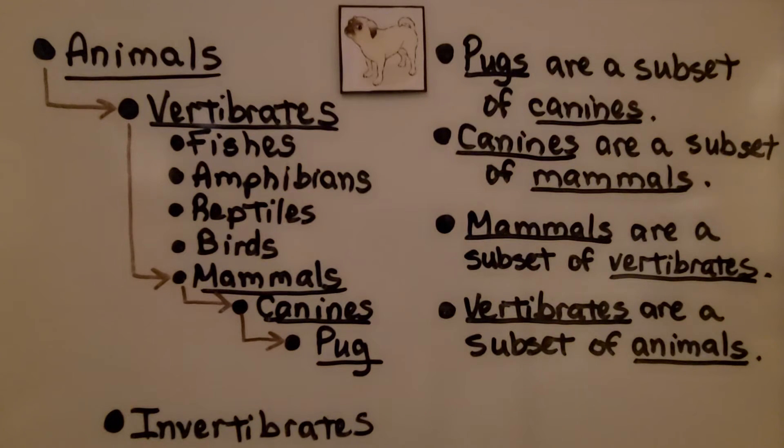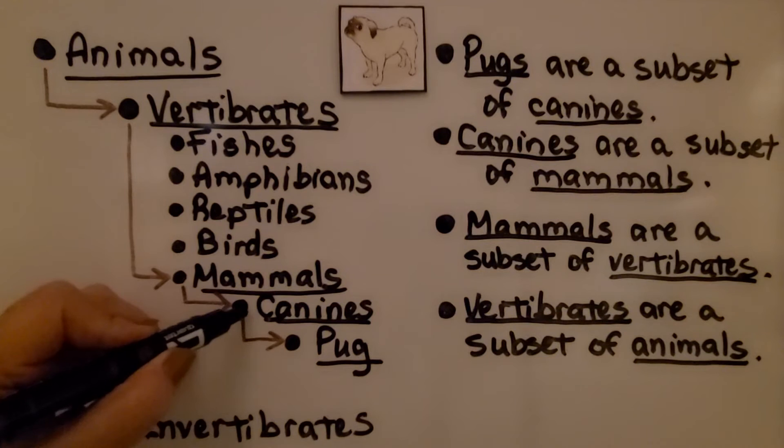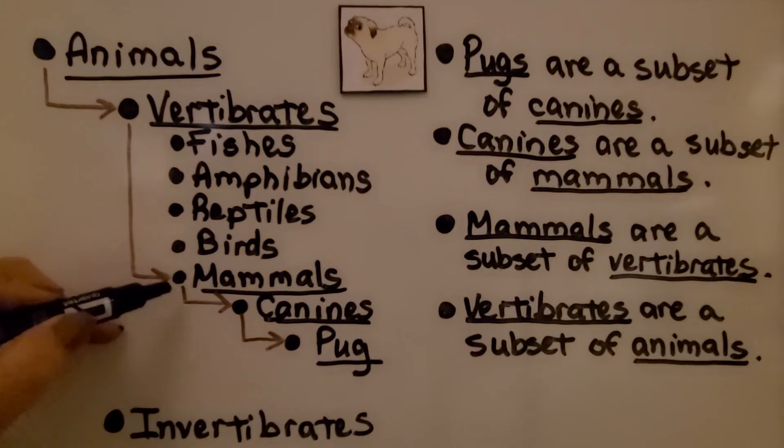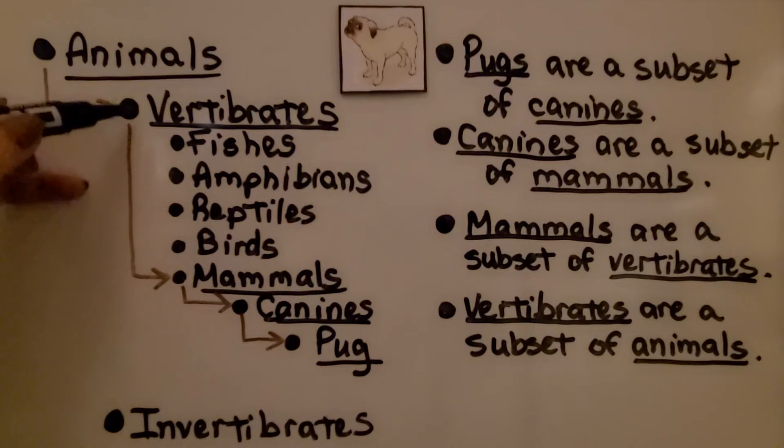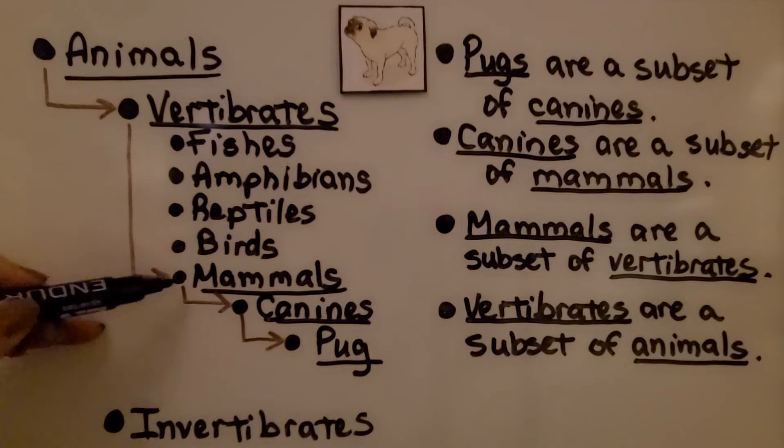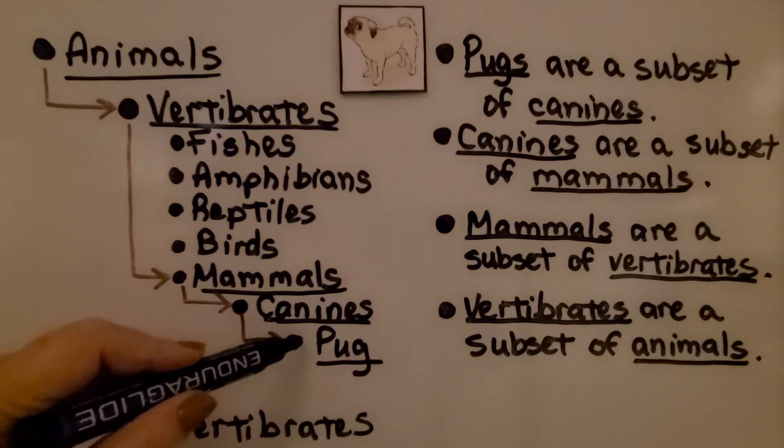To understand sets and subsets, let's take a look at pugs. Pugs are a subset of canines. Canines are a subset of mammals. Mammals are a subset of vertebrates, and vertebrates are a subset of animals. Animals include vertebrates and invertebrates, but under the vertebrates we have mammals, then canines, then the pug.